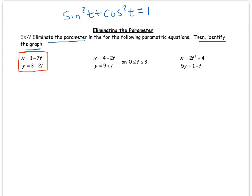I want to look at that first equation and I'm just going to solve this for t. So I'm going to minus 1 from both sides: x minus 1 equals negative 7t.